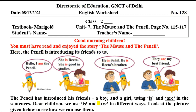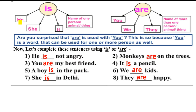तो जो pencil ने introduce किया अपने friends को — a boy and a girl — जिसमें उसने use किया is और are को sentences में। तो is और are को different ways में use करते हैं। Is — he के संग, she के संग, it के संग, किसी person के name, animal के name या thing के संग यूज़ होता है। वहीं are — you के संग, we के संग, they के संग, और एक से अधिक persons या animals के name के संग यूज़ होता है।